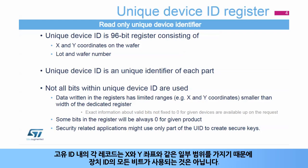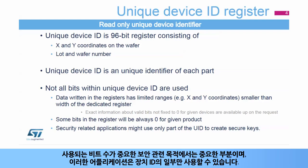As each record within the unique identifier has some range, like X and Y coordinates, not all the bits in the device ID are used. This is important for security-related purposes, where the number of bits used is an important parameter.